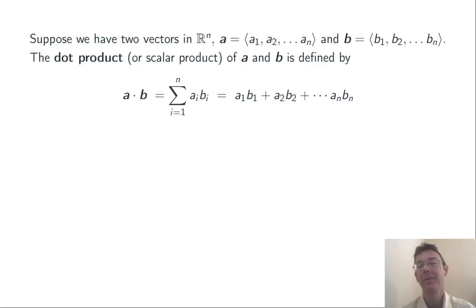Today we're talking about the dot product. We start with two vectors in R^n, two vectors of the same dimension. Let's call them A and B, and let's call their components A1 up to An and B1 up to Bn.